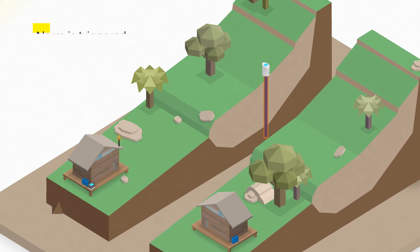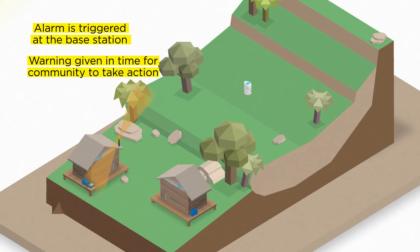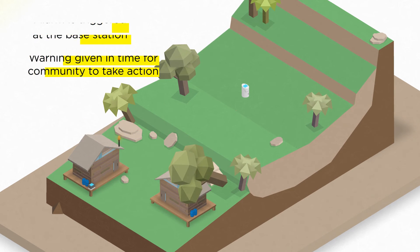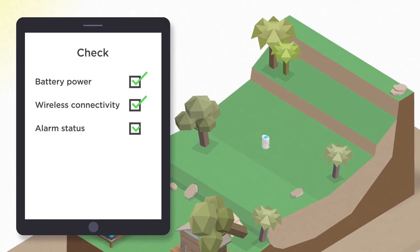This triggers a siren and a strobe, warning the community in time to take action. The system automatically performs health checks to ensure it's working.